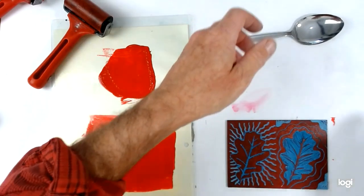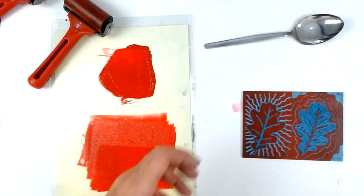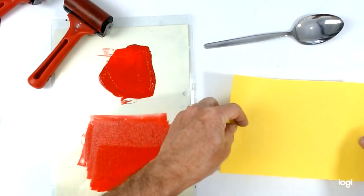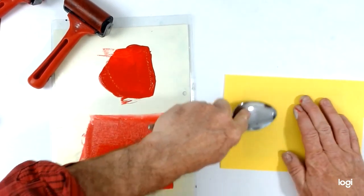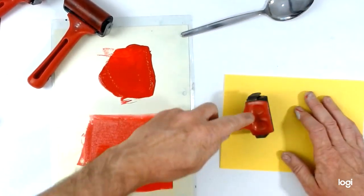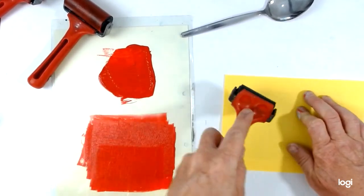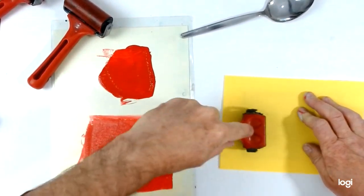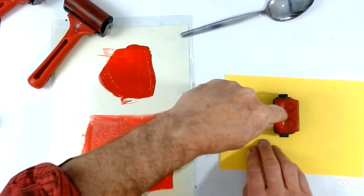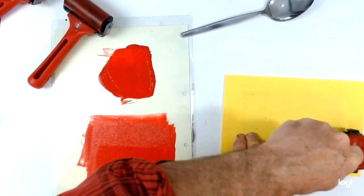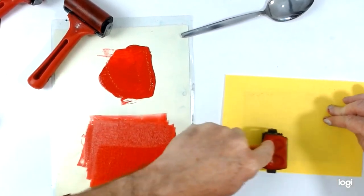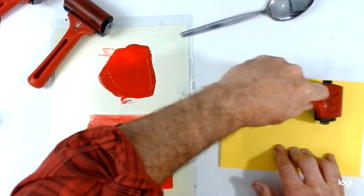And now with the ink on there, I'm going to place my paper over the lino and get it back in the middle. And then burnish with a spoon. If you have a spare small roller, you can use that to apply the pressure. It can help to stand up when you're doing this, just so you've got the extra bit of weight and pressure.